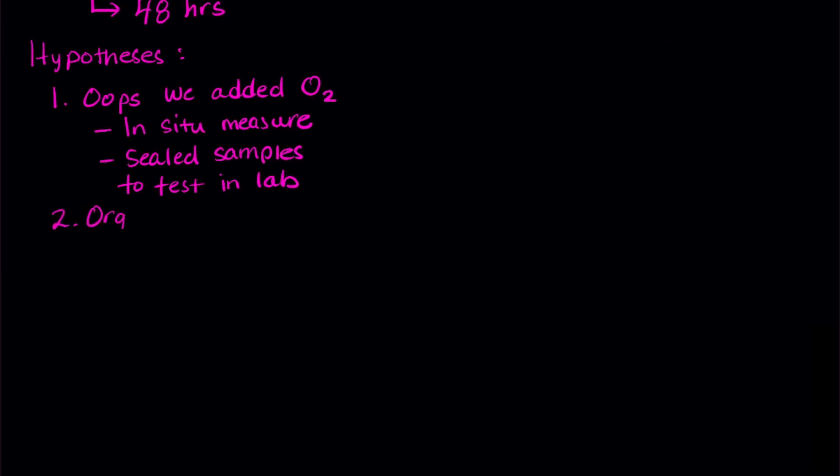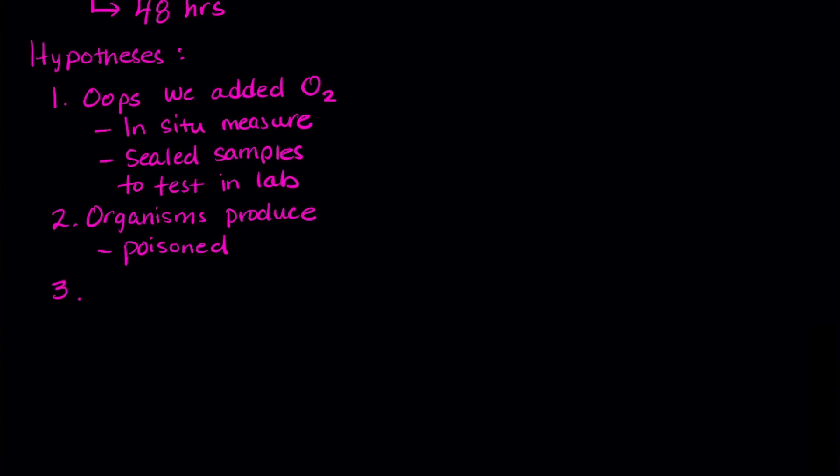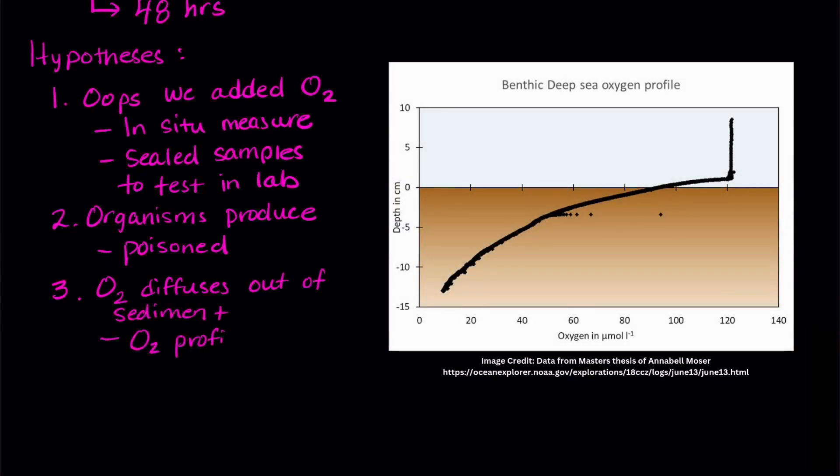Number two. Maybe organisms are producing oxygen somehow. So, the researchers tried to kill everything using poison, and then measured the oxygen. Three. It's possible that the oxygen was diffusing out of the sediment and into the water. So, they made an oxygen profile that shows the concentration of oxygen at different heights right around the sediment water interface.